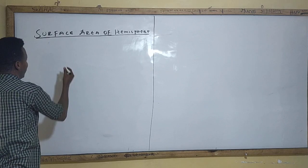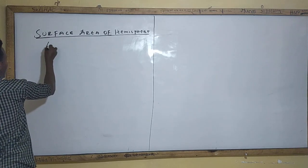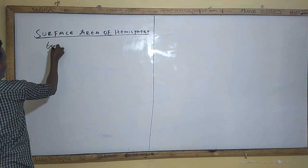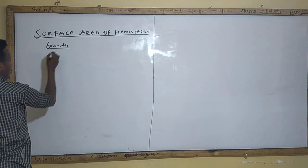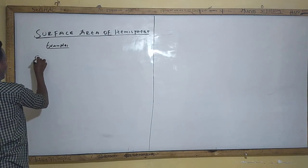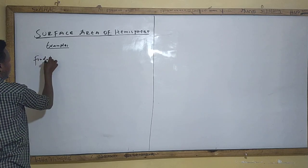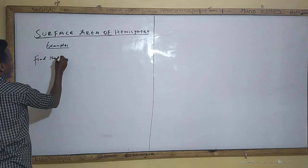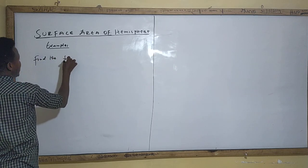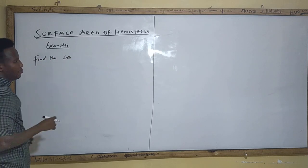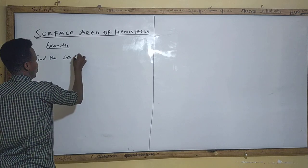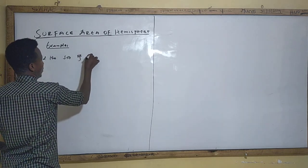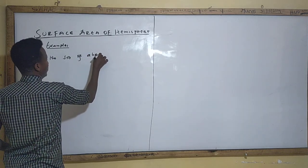Let's see the first example for hemisphere. The surface area of a hemisphere — find the surface area of a hemisphere.